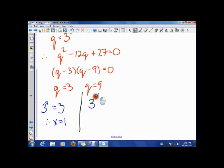And here, 3 to the x is 9. Well, that x has to be 2, right? Because 3 squared is 9. So there's our two solutions, x is 1, x is 2.